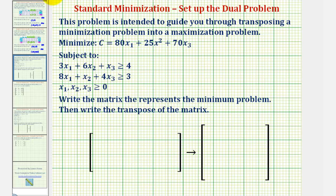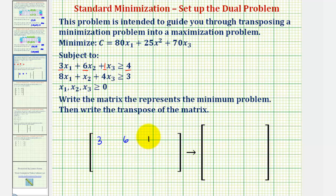Looking at the first inequality, the coefficients are three, six, one, and four — which form the first row of our matrix. So the first row is: three, six, one, four.